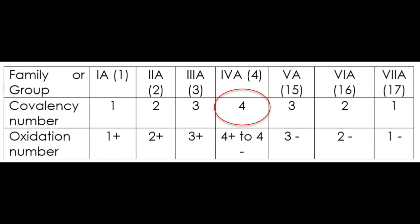How about the elements in Family 4 or Group 4A? They have a covalency number of four, meaning they can form four bonds only. A good example is the carbon atom. The value range of negative four to positive four tells us that carbon can have a charge of negative four to positive four, depending on the type of compounds or ions it will form.